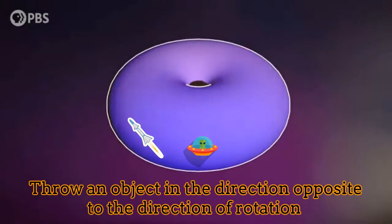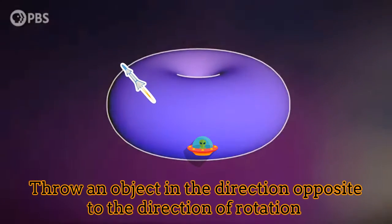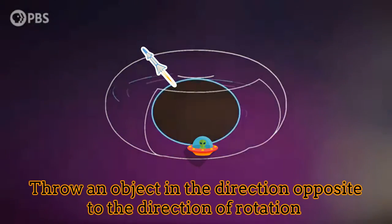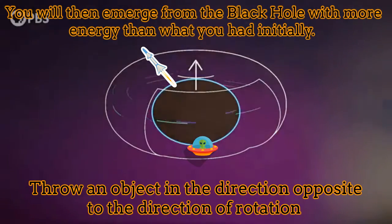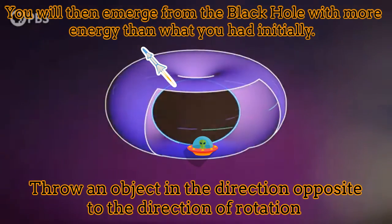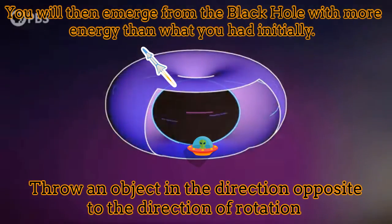Now, throw an object in the direction opposite to the direction of rotation of the black hole. In such a case, you will be able to go outside the ergoregion with an energy higher than the one you had initially.